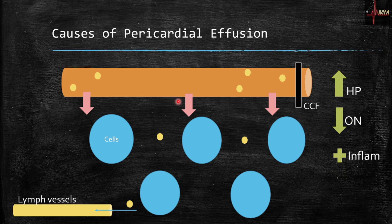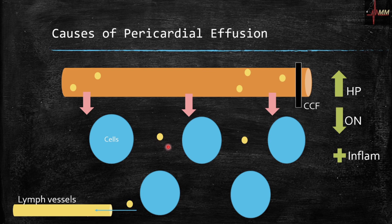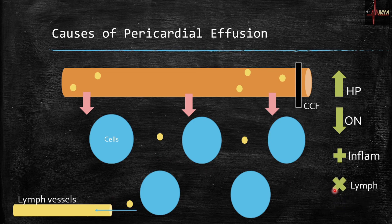A very important cause for pericardial effusion is inflammation. Inflammation in any system dilates the blood vessels, pushing fluid as well as proteins out of the vessels. The role of lymph vessels is to take up those small proteins and fluid filtered out and return them back to circulation. If lymph vessels are blocked by a tumor or infection, fluid builds up again — this is lymph obstruction.